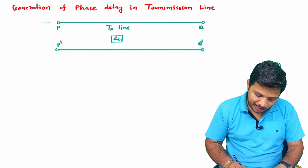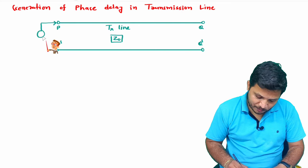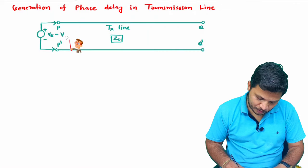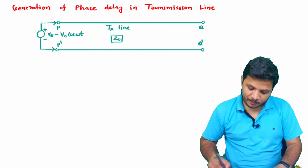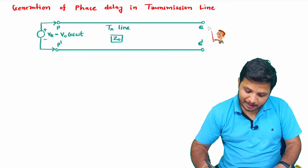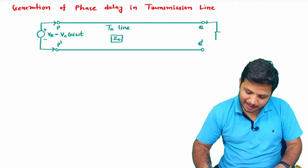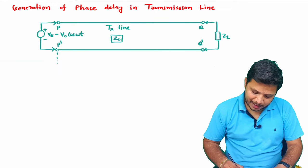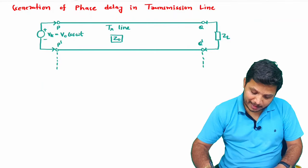At the input terminal I'll connect supply voltage Vg, where Vg equals V0 cos(omega t). At the output side I'll connect load impedance ZL. The length of the transmission line is given as L.